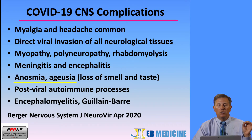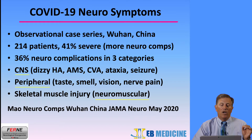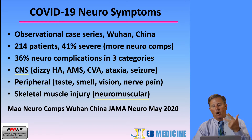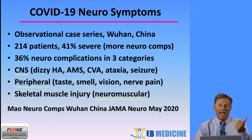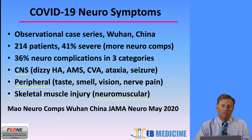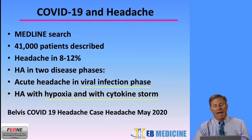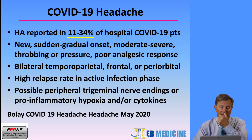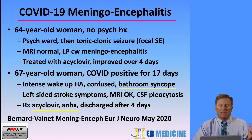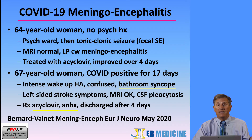COVID-19 can cause anosmia or ageusia, which is loss of smell and taste. In general, there are three types of neurosymptoms with COVID-19. We know that headache occurs in up to one-third of hospitalized patients. COVID-19 can cause peripheral trigeminal neuralgia, and meningoencephalitis can occur. There are case reports of patients who had seizures and syncope, requiring treatment with acyclovir and antibiotics.